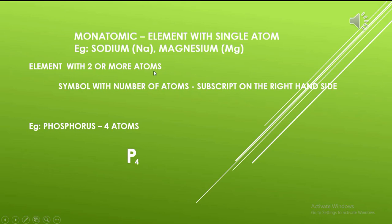When an element exists as a molecule which consists of two or more atoms, its molecular formula is the symbol of the element with a subscript on the right-hand side that represents the number of atoms present in one molecule.